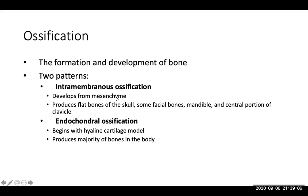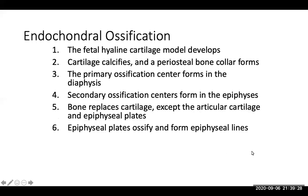Intramembranous ossification develops from mesenchyme, a type of tissue, and produces the flat bones of your skull, facial bones, mandible, and the central portion of your clavicle. Endochondral ossification begins with a hyaline cartilage model, meaning it starts with hyaline cartilage as it begins to form, and this produces the majority of the other bones in your body.